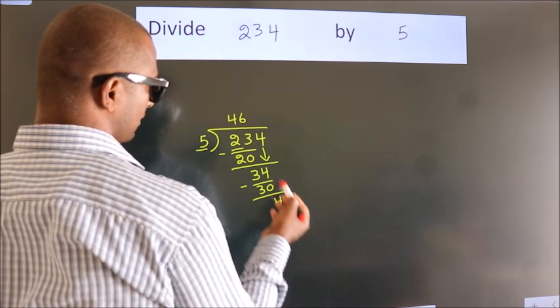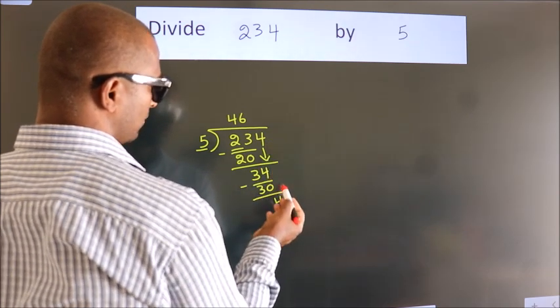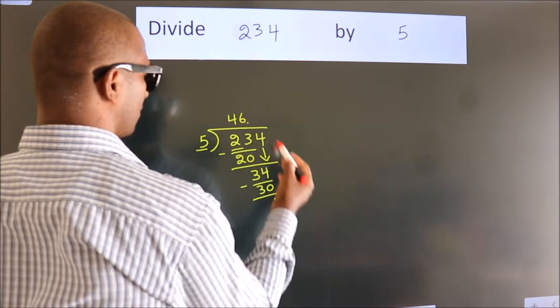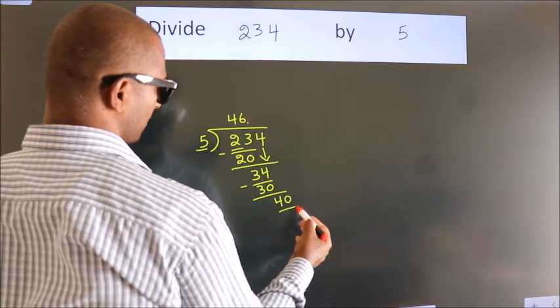After this, no more numbers to bring down. So what we do is, we put a dot and take 0. So 40.